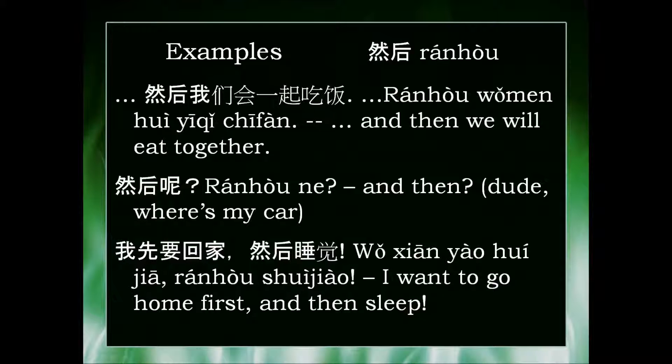然后我们会一起吃饭. For instance, some friends are planning their night out and they've planned certain elements of that night — 'and then we will eat together.' Another example is 然后呢, which is pretty much the way of saying 'and then?' in Chinese.